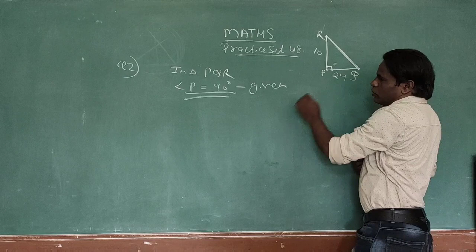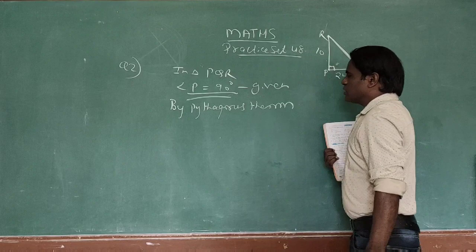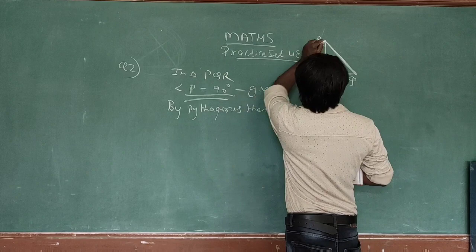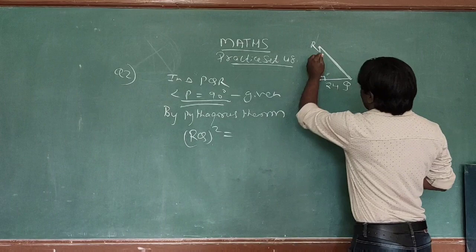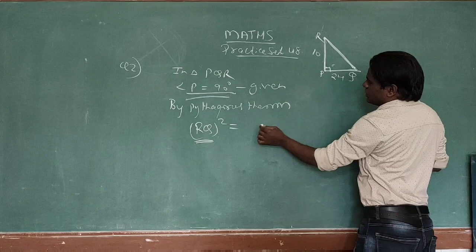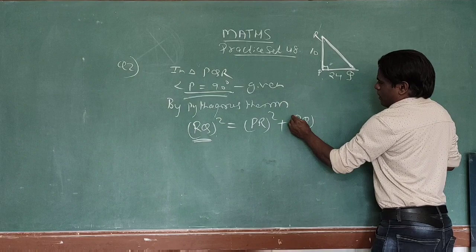By Pythagoras theorem, the hypotenuse squared equals one side squared plus the other side squared. So RQ squared equals RP squared plus PQ squared.